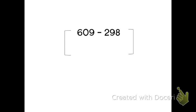609 minus 298. This problem you will see that we will be messing with the numbers on both sides. We will come up with easier numbers to subtract both with our first number and our second number. 609 we know is pretty close to 600.